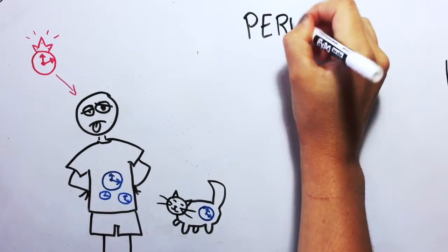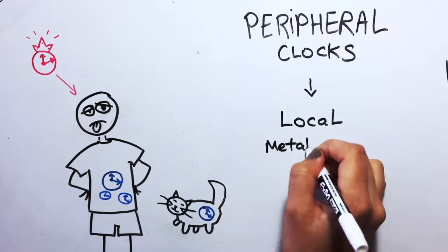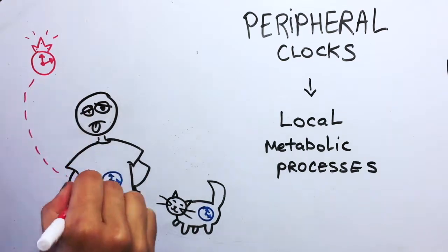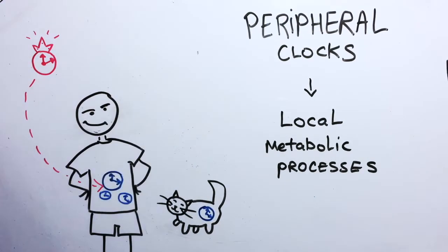The peripheral clocks, on the other hand, regulate local metabolic processes. Now, while the master clock sends signals to all these peripheral clocks on how to synchronize with the right time of the day, they are mainly set by eating behaviors, such as the time at which we eat.